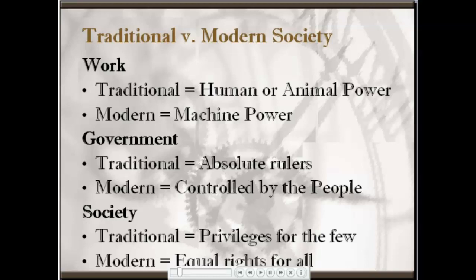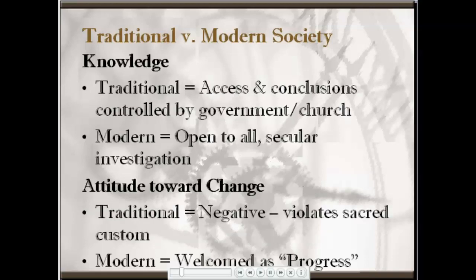In modern society, we're going to start to see the move towards governments controlled by the people — representative governments in which politicians depend on being re-elected through popular elections to remain in office. Traditional society was characterized by privilege for a select few, whereas in modern society we see an insistence on equal rights for all — the belief that there is an innate equality that exists in society across social and political boundaries. Because of the privilege that government and church enjoyed in traditional society, access to knowledge was dominated by these two institutions.